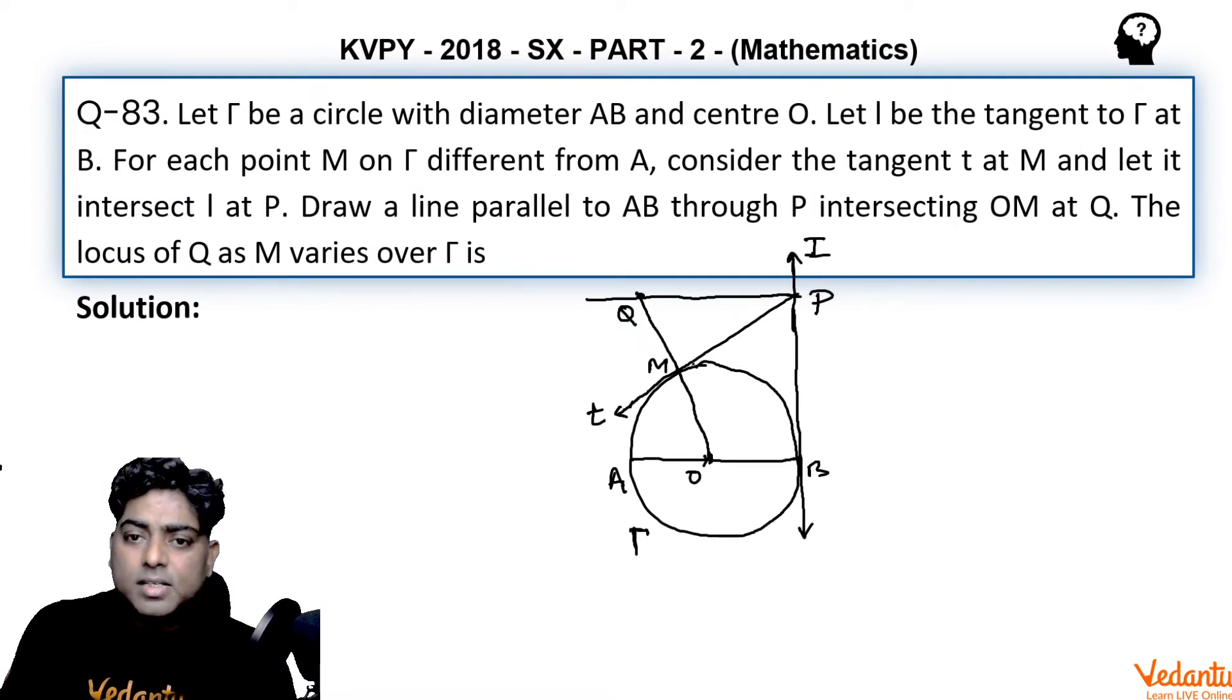Whenever I see a tangent on a circle, first I draw 90 degrees. These angles are 90 degrees because these are two tangents, and the meeting point of these two tangents is point P. I always join the point P with the center of the circle, so I am joining P to O.